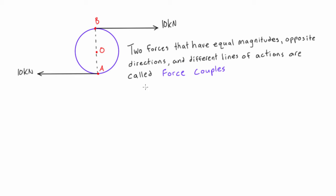With that said, it's important to note that the vector sum of a force couple is zero. Basically in the x-direction, or whatever direction we have these parallel forces drawn in, they'll cancel each other out, so we're not going to have this object tending to drift either way. And the moment exerted is the same about any point on the object.